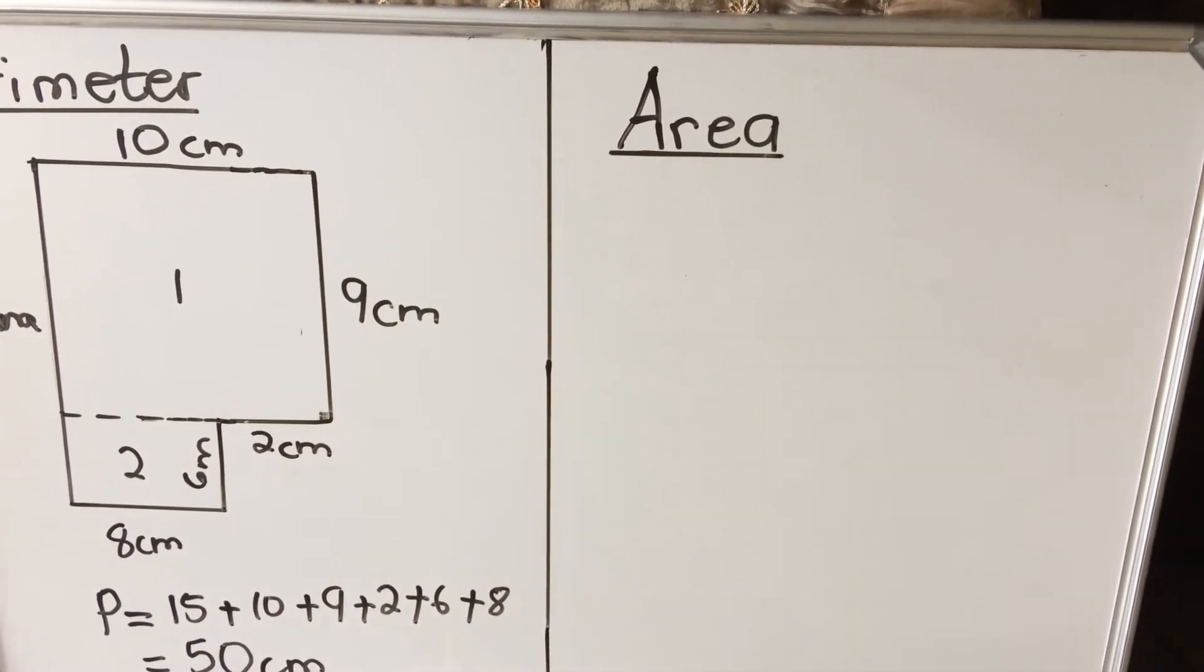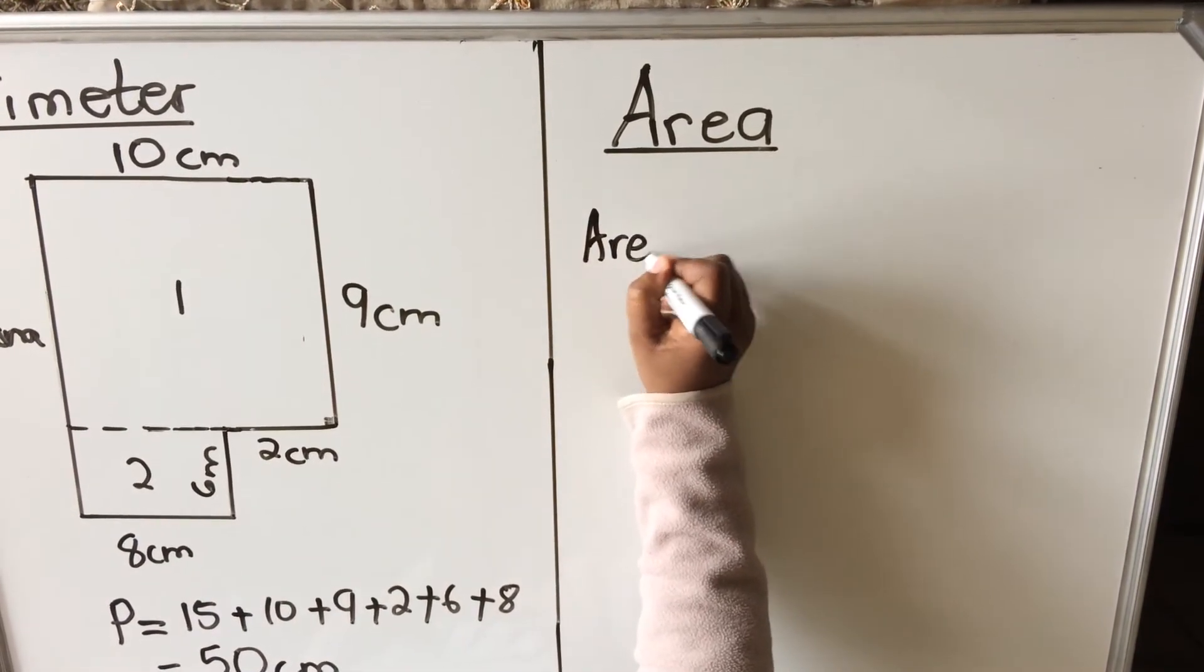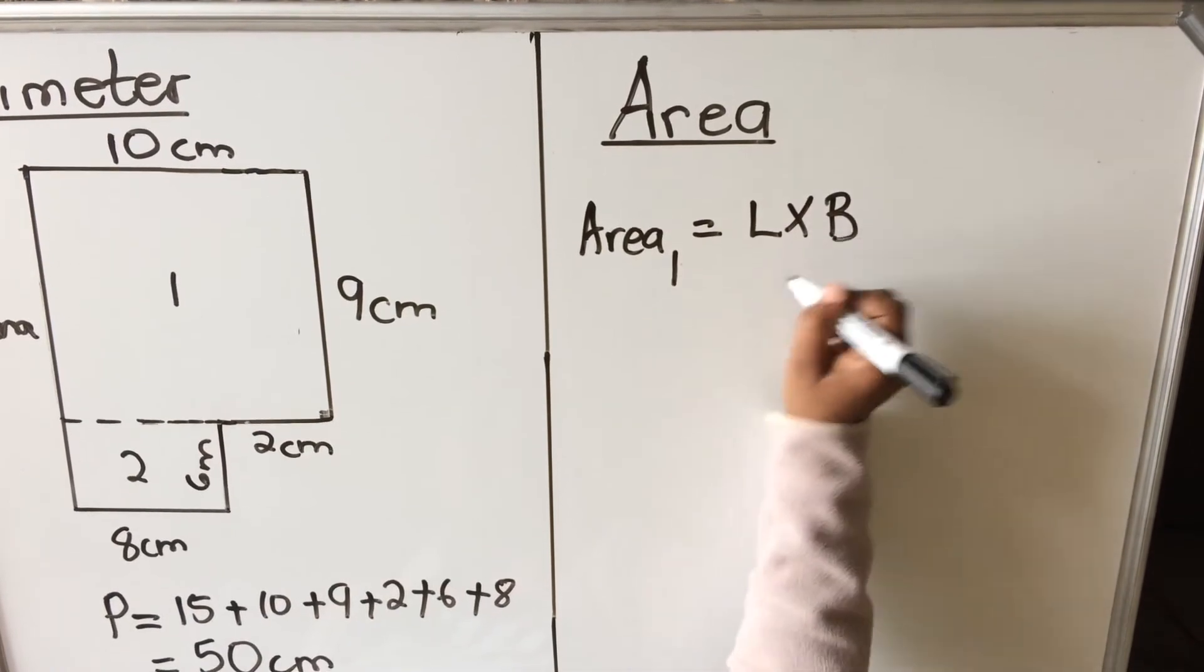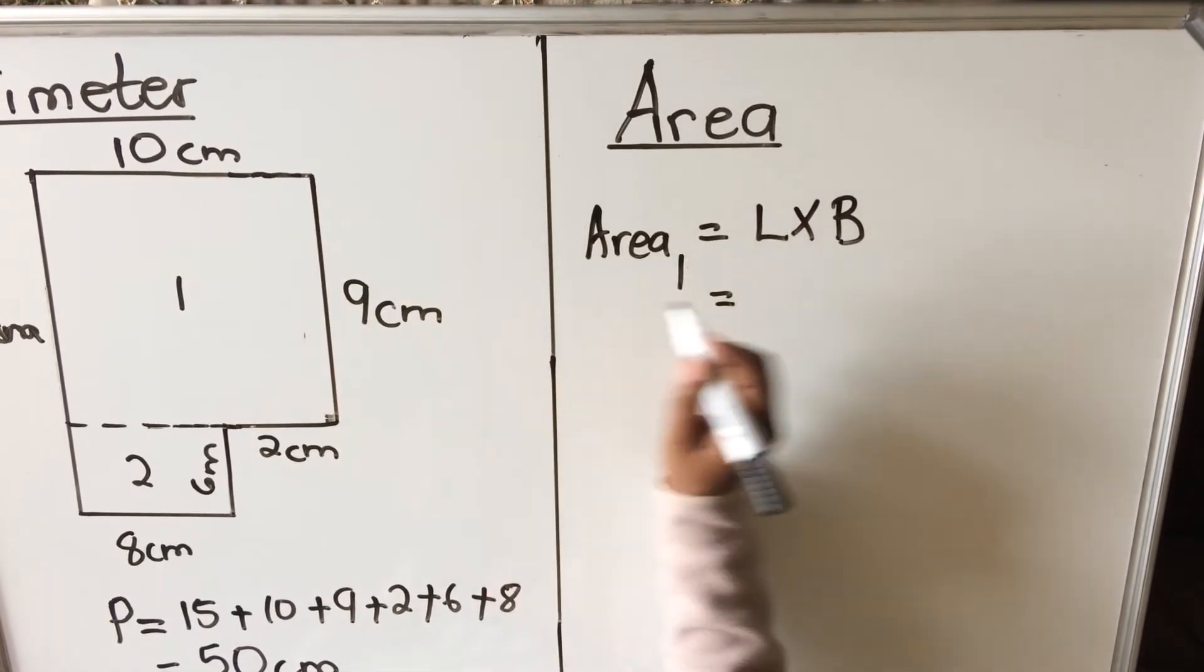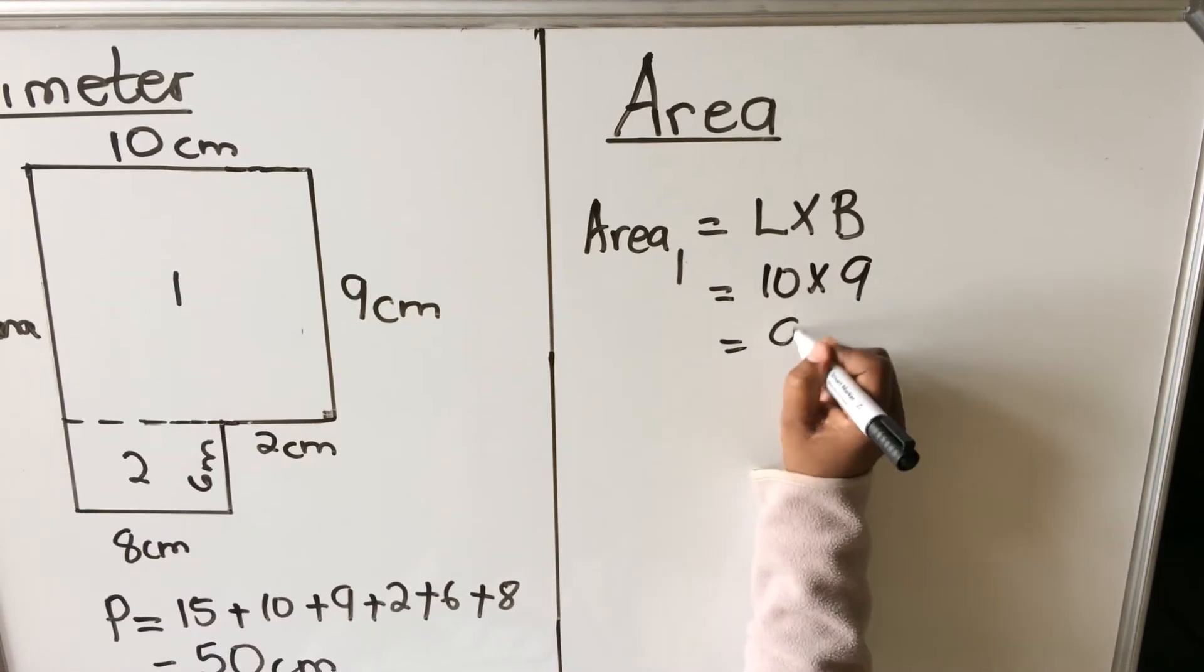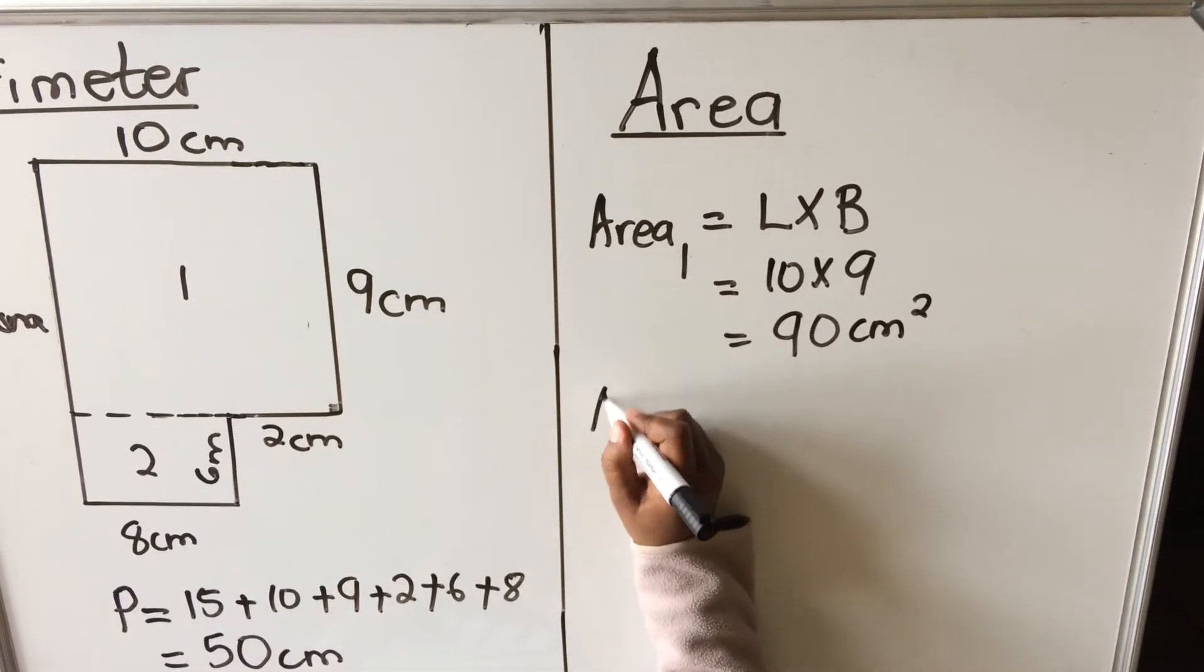Area of rectangle 1 is equal to length times breadth. My length is 10, my breadth is 9, so I have 90 centimeters squared.